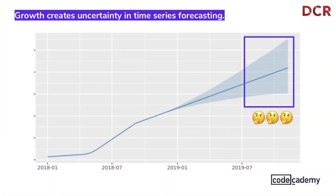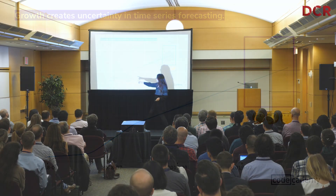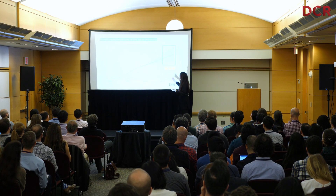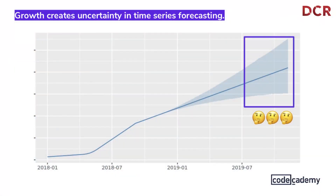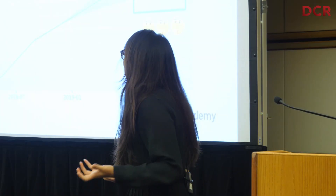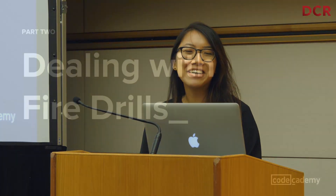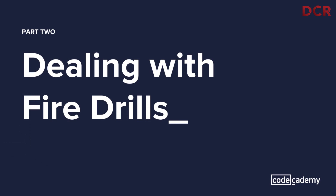Here's an example of some data I work with — you can see that hockey stick growth right here. When I try to project out to 2019 using Prophet, which is a forecasting package open-sourced by Facebook, look at the degree of uncertainty for 2019: it's so wide that this forecast is not actionable or useful.